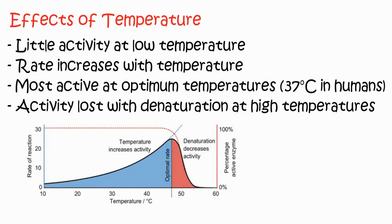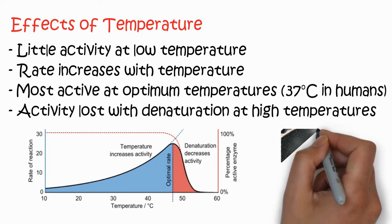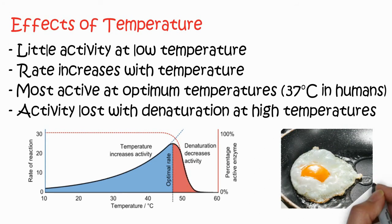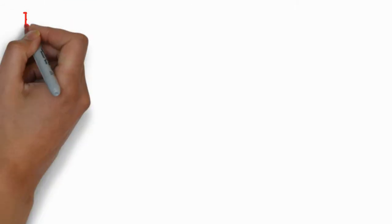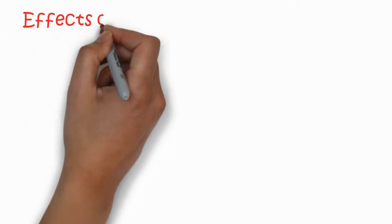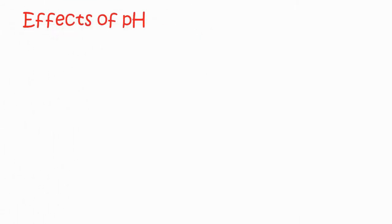You can see in this picture the activity of enzyme increases with temperature, and then there is a peak which we call optimal temperature, and then the activity decreases. The most common example is the frying of the egg.